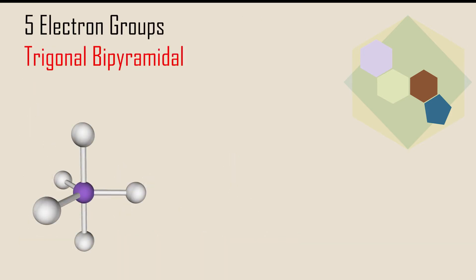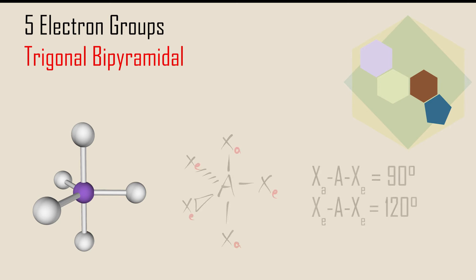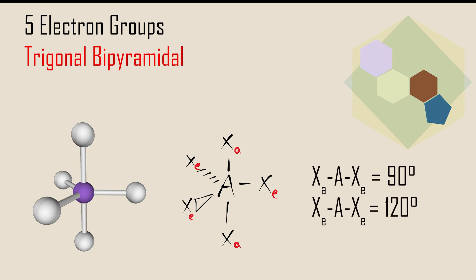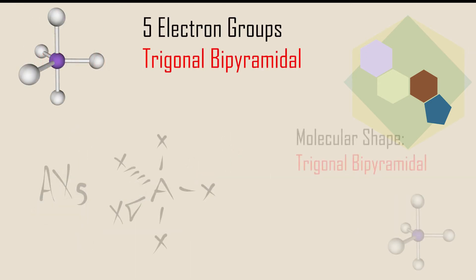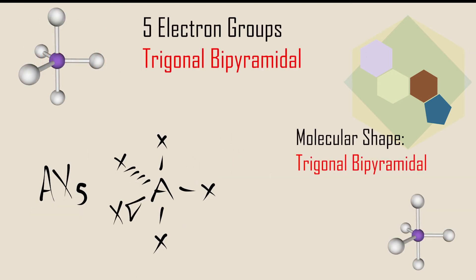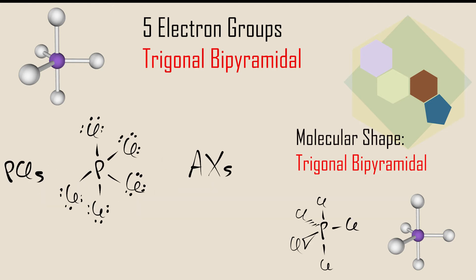Five electron groups maximize their separation around a central atom by forming the trigonal bipyramidal arrangement. There are two types of positions for surrounding electron groups and two ideal bond angles. Three equatorial groups lie in a trigonal plane that includes the central atom, and two axial groups lie above and below this plane. Therefore, 120-degree bond angles separate equatorial groups and a 90-degree bond angle separates axial from equatorial groups. When all five positions are occupied by bonded atoms, the molecule has the trigonal bipyramidal shape. PCl5 is a molecule with an AX5 designation; its electron group geometry and molecular geometry are both trigonal bipyramidal.